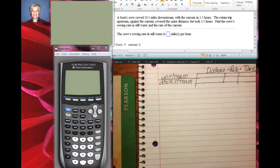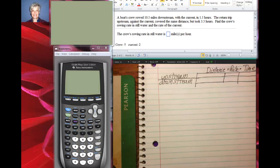Hi, this is your math prof Barbara Rademacher and we're going to go sailing down a river. A boat's crew rowed 10.5 miles downstream with the current in 1.5 hours. The return trip upstream against the current covered the same distance but took 3.5 hours. Find the crew's rowing rate in still water and the rate of the current.